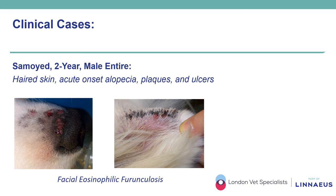A two-year-old entire male Samoyed presented with a history of acute-onset alopecia with coalescing papules, nodules and plaques superficially ulcerated, delimited mostly to the dorsal bridge of the muzzle and affecting only the haired skin. The condition also involved the margins of the ear pinna with crusting and small ulcerations. The clinical signs appeared acutely within one to two hours after a walk in a rural area, and the combination of history and clinical features suggested a most likely diagnosis of eosinophilic furunculosis of the face, believed to be an immunological process secondary to insect or spider bites.